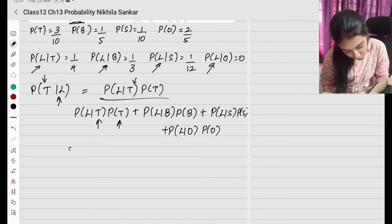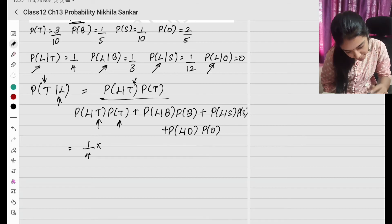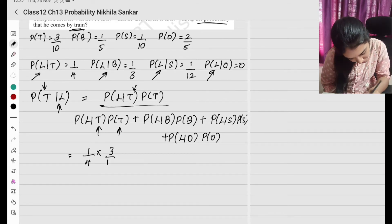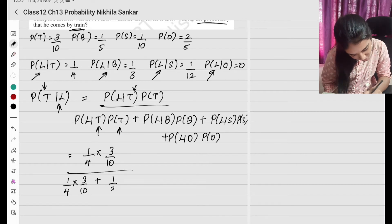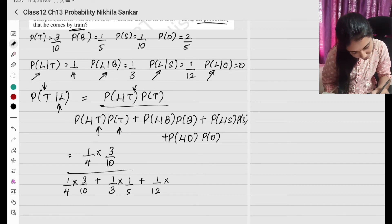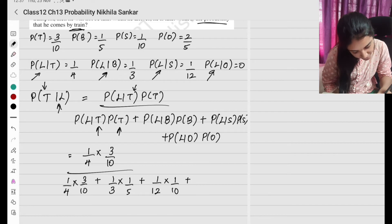Substituting the values: numerator is late given train — 1 by 4 times probability of train 3 by 10, giving 3 by 40. Denominator: 1 by 4 times 3 by 10, plus 1 by 3 times 1 by 5, plus 1 by 12 times 1 by 10, plus 0 times 2 by 5.